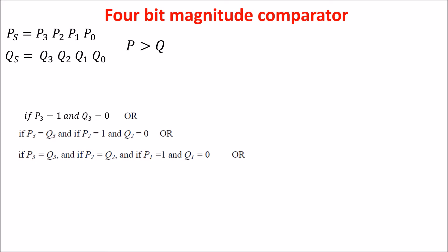The fourth condition implies that P0 is 1 and Q0 is 0 and all the more significant bits are equal. These statements can be expressed in this other way.